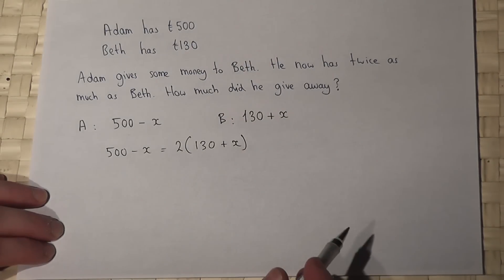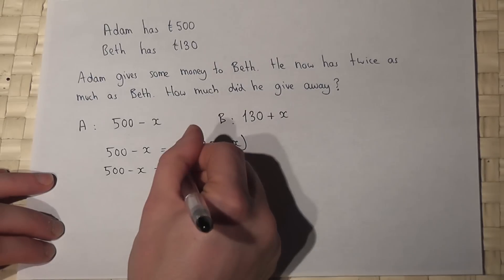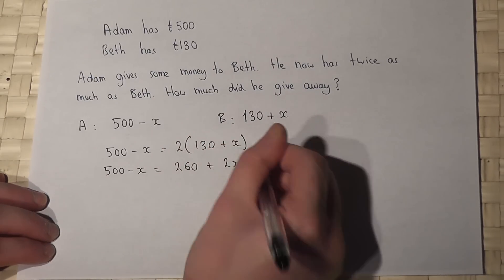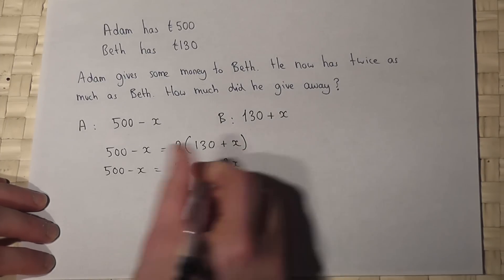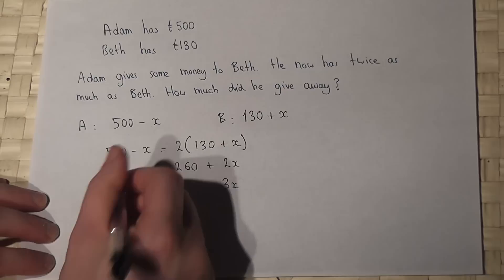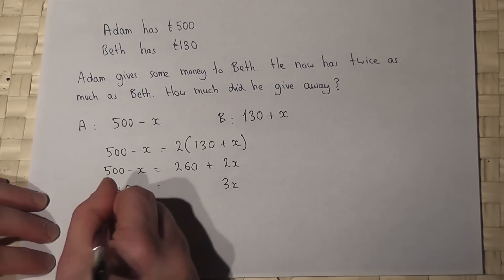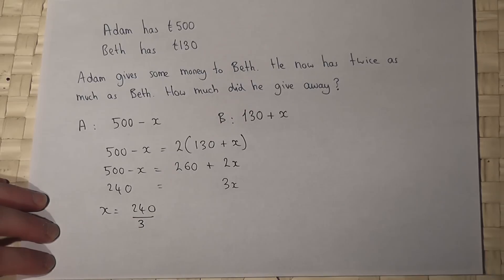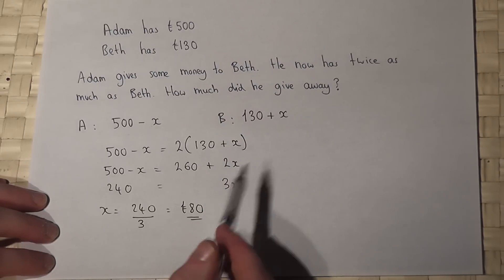Let's expand the bracket, so 260 plus 2X. I will add the X to that side to get 3X, and I will subtract the 260 to give me 240. So X will be 240 divided by 3, which is 80 pounds. So Adam gave 80 pounds to Beth.